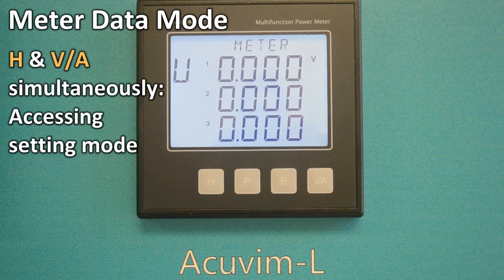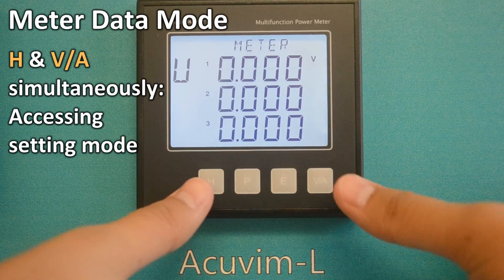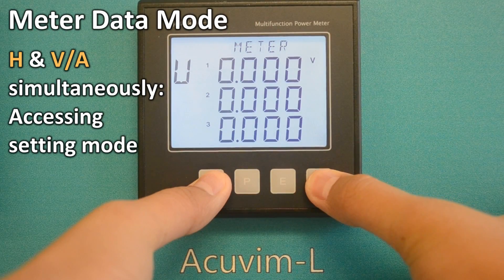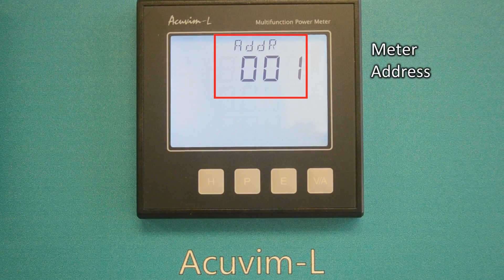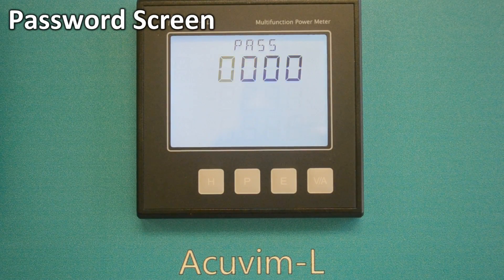Press the H and VA keys simultaneously and the screen will briefly display ADDR001, meaning the meter address is 001.